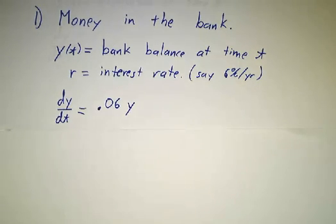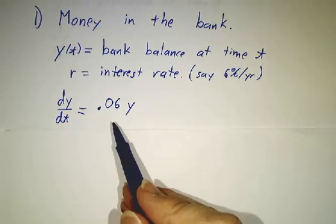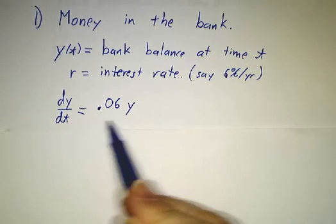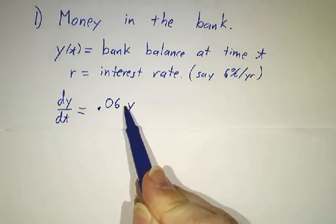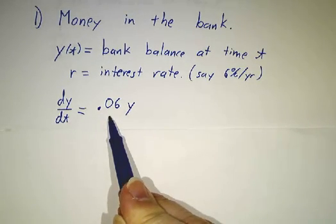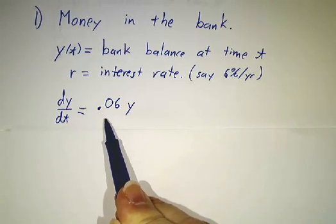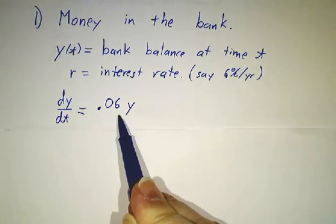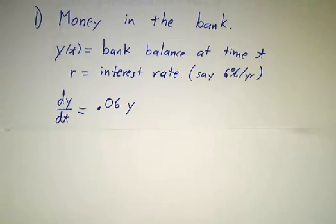Now if you went to a different bank that was only paying 4% interest, it would have a different law. But the rules of the game that describe what's happening at this bank is this equation. And if you want to understand how this is going to behave, well then you look for a solution to this equation.